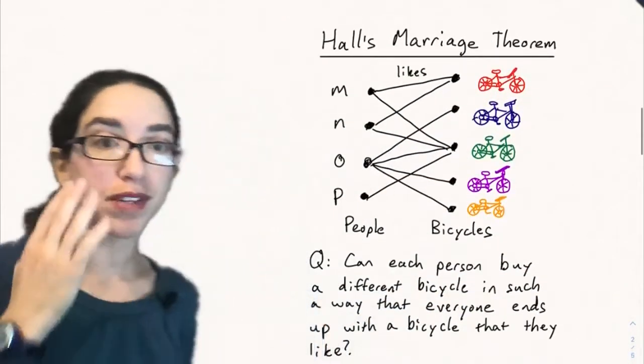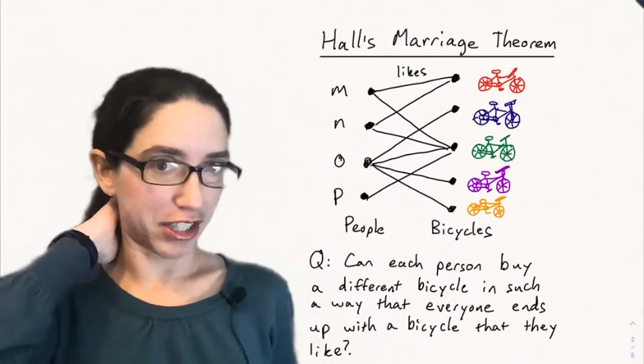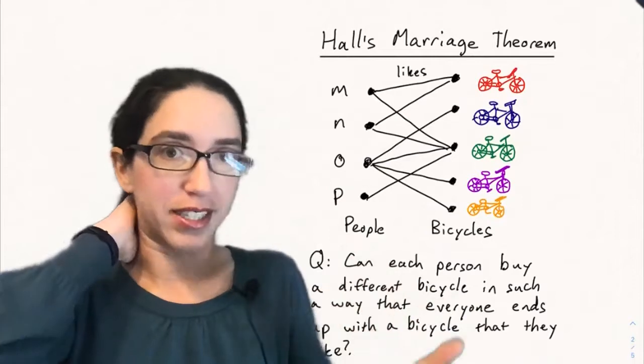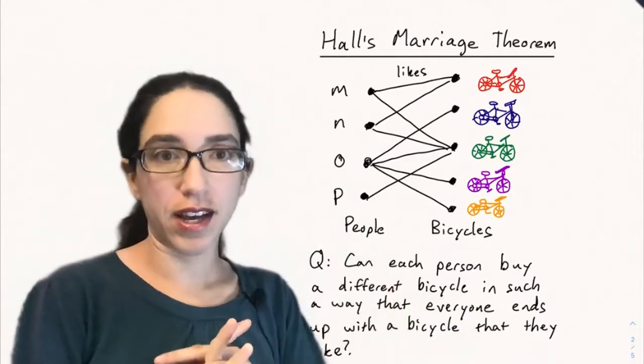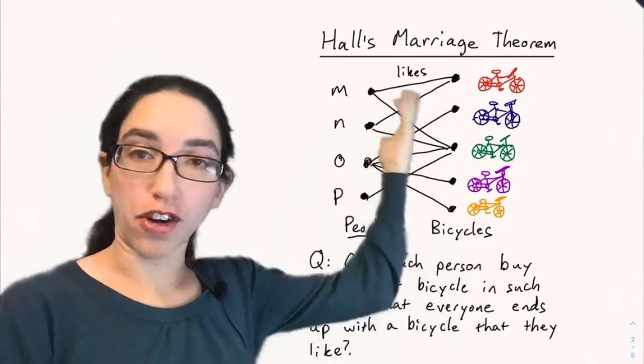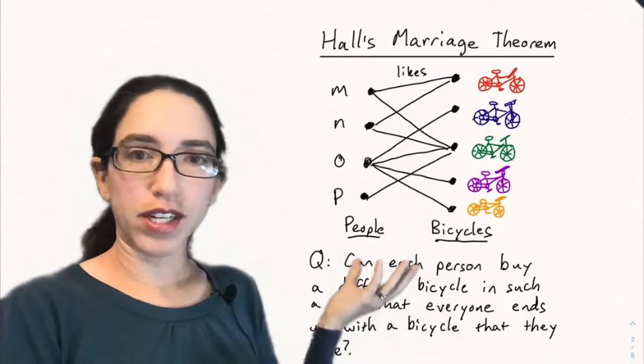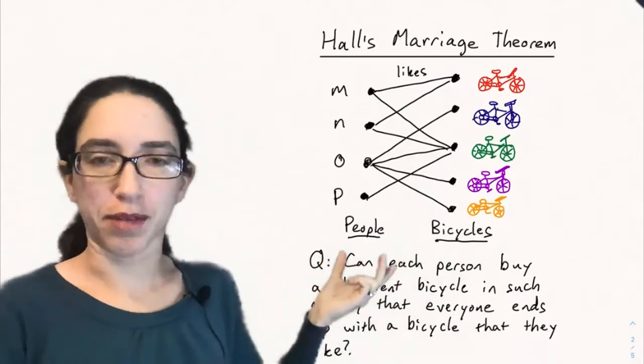And now we're going to look at a very specific case where there's a famous theorem about when a maximum matching, sort of a matching of the right size that you would expect exists. And that is finding matchings in bipartite graphs. And the theorem is called Hall's marriage theorem that we're going to talk about today.